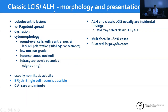Classic CIS and ALH are lobular-centric; we can have pagetoid spread and they're characterized by discohesion. The cells are round to oval with central nuclei, not polarized — a 'fried egg' appearance with the nucleus in the center. The nucleus has low-grade morphology: very small with a regular nuclear membrane, and nucleoli tend to be inconspicuous. Intracytoplasmic vacuoles are present. Usually we don't find any mitotic activity in classic lobular neoplasia.